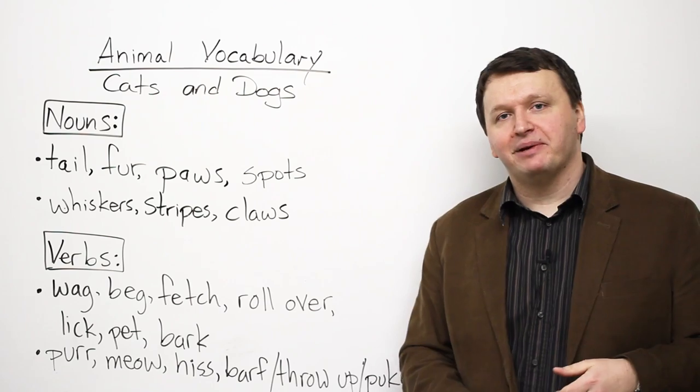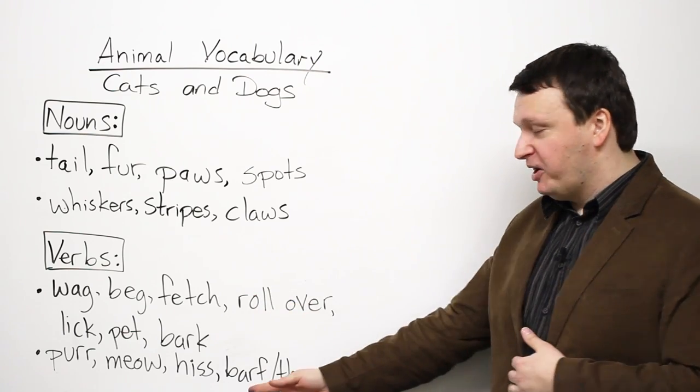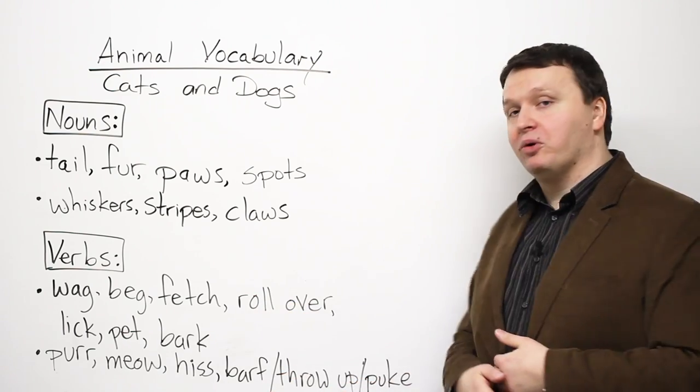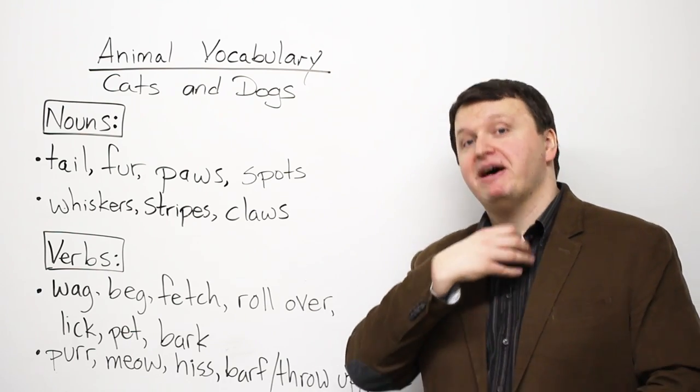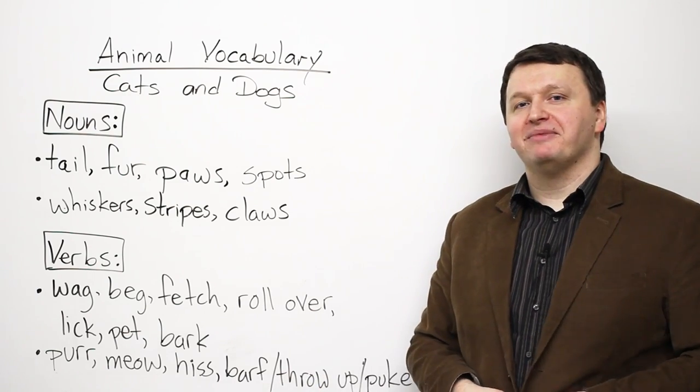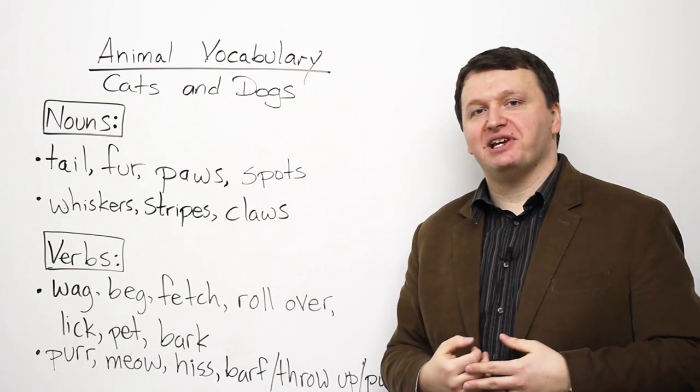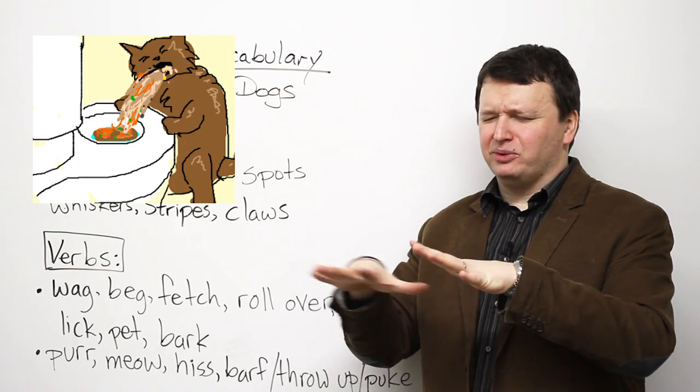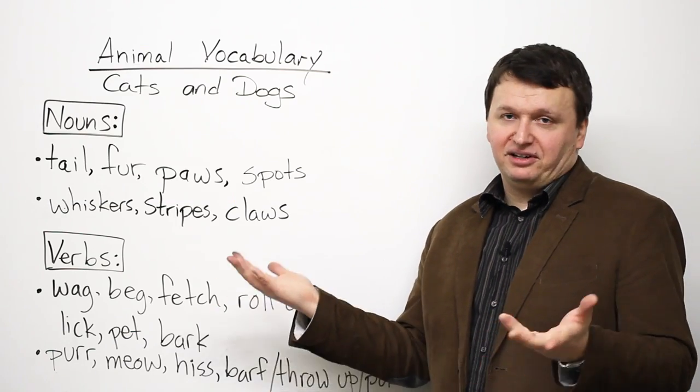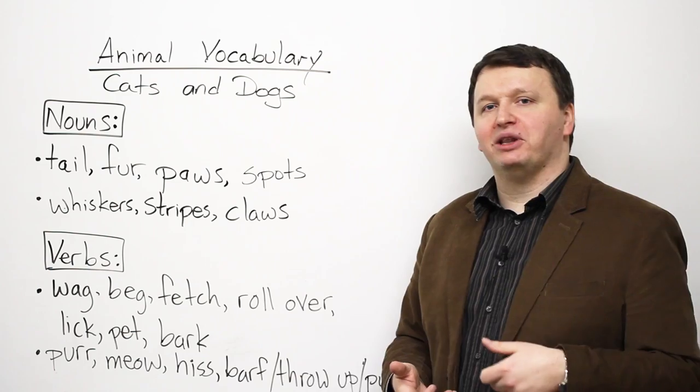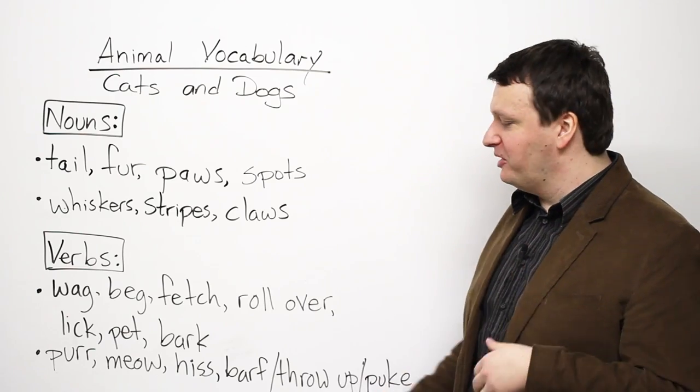And last of all, this is something that cats do a lot. Dogs can do it too. Humans do it too. Barf, throw up, or puke. So this is if you eat something and it comes back out of your mouth. Cats often cough up, or barf up, throw up, hairballs, for example, or just a lot of really gross, disgusting, not nice things. So this means to... The correct verb is regurgitate. So you can look up regurgitate. But informally, we say throw up, or puke, or barf.